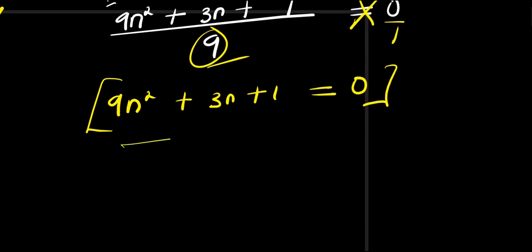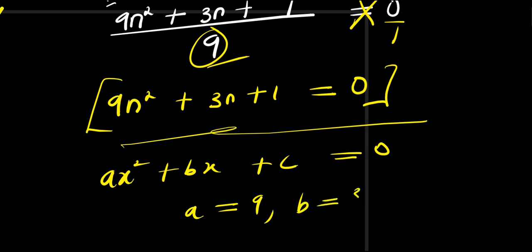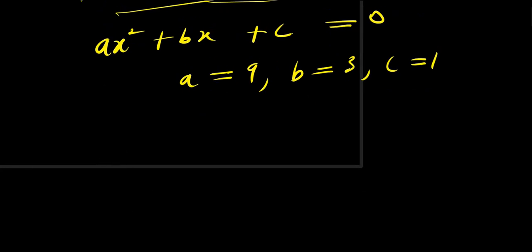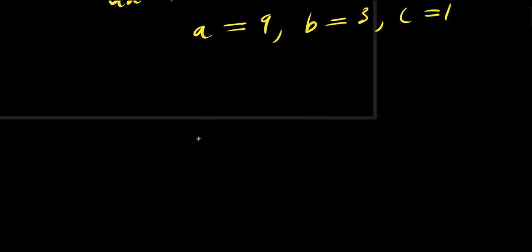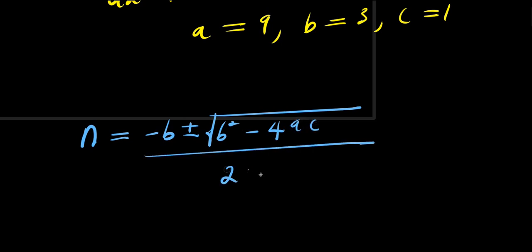We are going to compare this with the general quadratic formula ax squared plus bx plus c equals 0. From here our a equals 9, b equals 3, and c equals 1. Now we are going to use the quadratic formula: n equals negative b plus or minus square root of (b squared minus 4ac) divided by 2a.